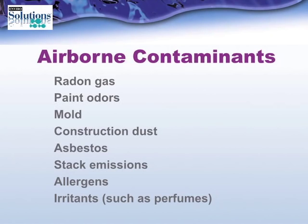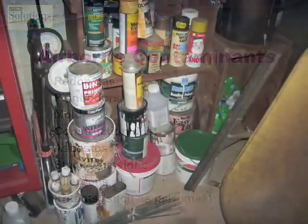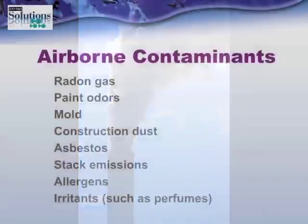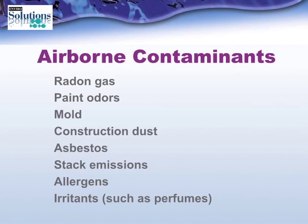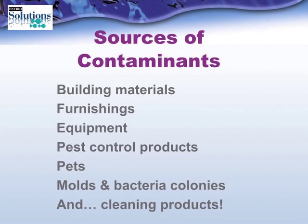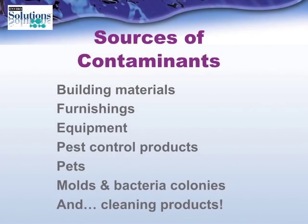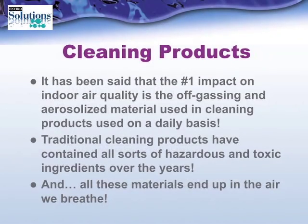Some of the airborne contaminants we worry about are radon gas, paint odors, mold, construction dust and asbestos, smokestack emissions, allergens, and irritants such as perfumes. Some common sources of contaminants are building materials, furnishings, equipment, pest control products, pets, mold and bacteria colonies, and cleaning products. It's been said that the number one impact on indoor air quality is the off-gassing and aerosolized material used in cleaning products on a daily basis.